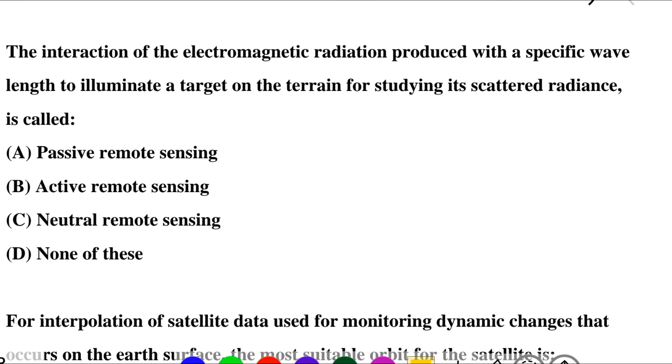Next question: the interaction of electromagnetic radiation produced with a specific wavelength to illuminate a target on the terrain for studying its scattered radiance is called — option A: passive remote sensing, option B: active remote sensing, option C: neutral remote sensing, option D: none of the above. So the correct answer is option B: active remote sensing.